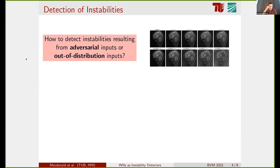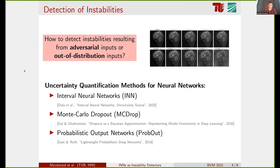The method that we propose to use to detect these perturbations or these instabilities are uncertainty quantification methods that have already been proposed for neural networks. The idea behind this is, of course, if a small perturbation can lead to large changes in the output, then this should always come also with uncertainty in the prediction because the network was so sensitive to these changes.